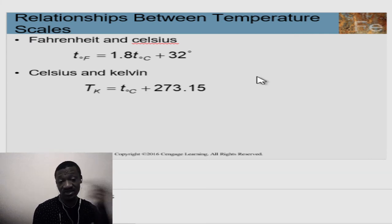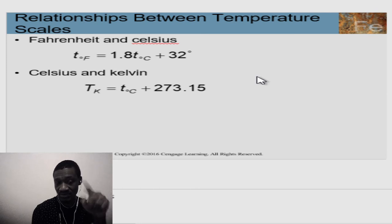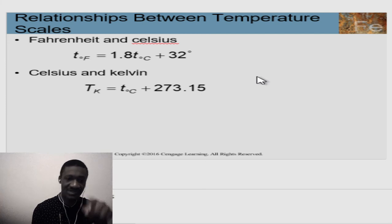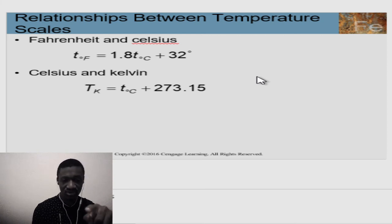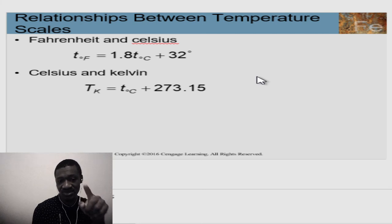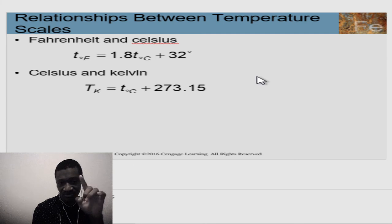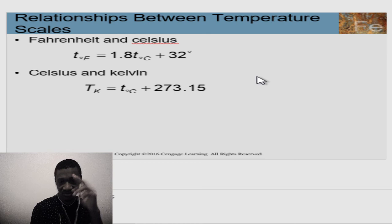The conversion formulas: degrees Fahrenheit equals 1.8 times degrees Celsius plus 32. To reverse, subtract 32 from the Fahrenheit value and divide by 1.8. For Kelvin, add 273.15 to the Celsius value. Celsius is the central unit — from it you can find both Fahrenheit and Kelvin, making it the key to all temperature conversions.